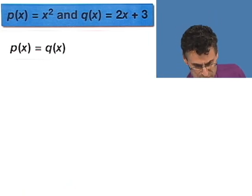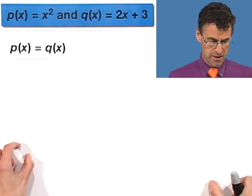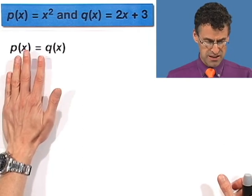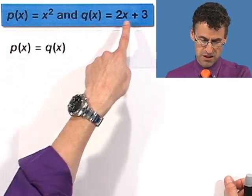So what we're saying here is we want to find the x values for which they share the same y value. So what do you do here? It's actually no big deal. You just do what's said. Take the p stuff, which is this, and set it equal to the q stuff, which is that.